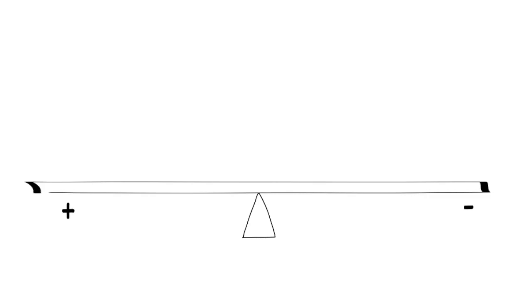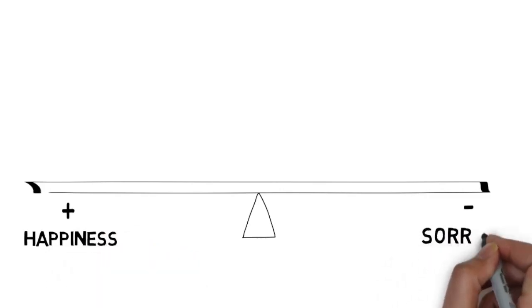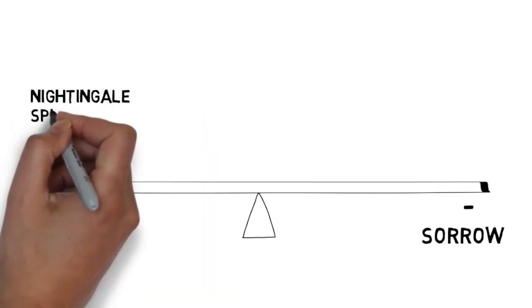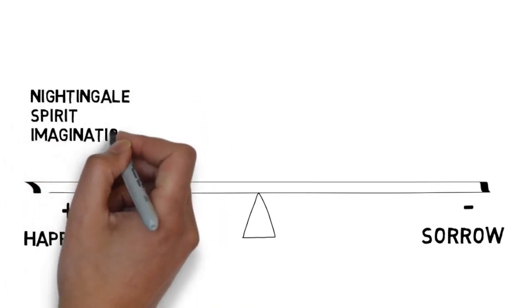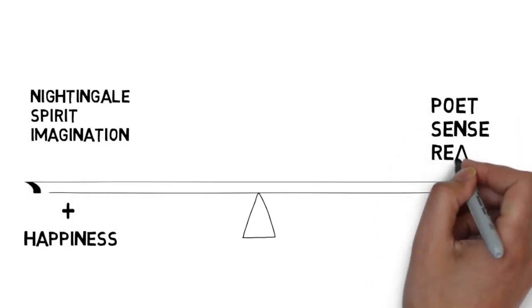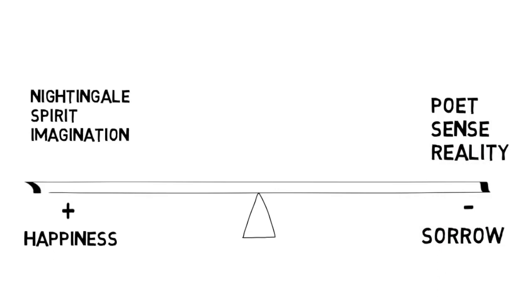Before we go on to the last two stanzas, let's just take a look at what we've got so far. There's a basic opposition between happiness and sorrow, with the Nightingale representing the world of the spirit and imagination on the side of happiness, and the poet representing the world of sense, the world of reality, on the side of sorrow.